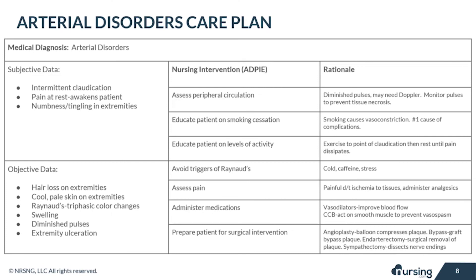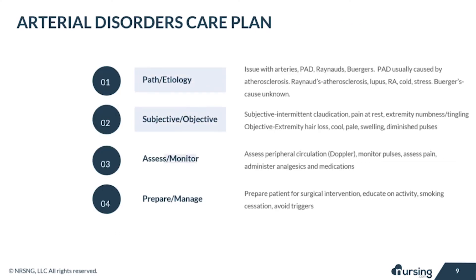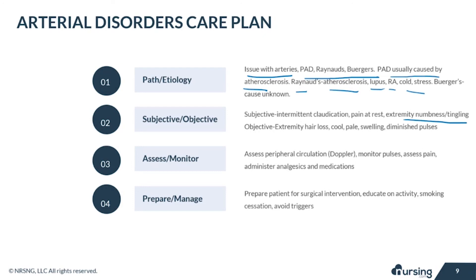Here is a look at the completed care plan for arterial disorders. Let's do a quick review. Arterial disorders affect the arteries, which are vessels that carry oxygenated blood to the body. Arterial disorders include PAD, Raynaud's, and Buerger's. PAD is usually caused by atherosclerosis, while Raynaud's can be caused by atherosclerosis, lupus, and rheumatoid arthritis, also cold and stress. For Buerger's disease, the cause is unknown. Subjective data includes intermittent claudication, pain at rest, extremity numbness, and tingling.